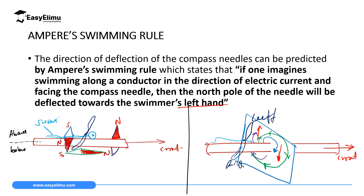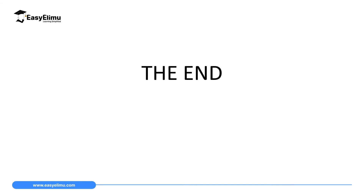Through this, we have used the Ampere swimming rule to determine the direction of magnetic field along a wire carrying current. And this rule states that if one imagines swimming along a conductor in the direction of current and facing the compass needle, then the north pole of the needle will deflect toward the swimmer's left hand. Then automatically, the south pole will deflect towards the swimmer's right hand. So that marks the end of our lesson today. In the next lesson, we will discuss more examples of determining the direction of magnetic field along a current-carrying conductor using the Ampere swimming rule.